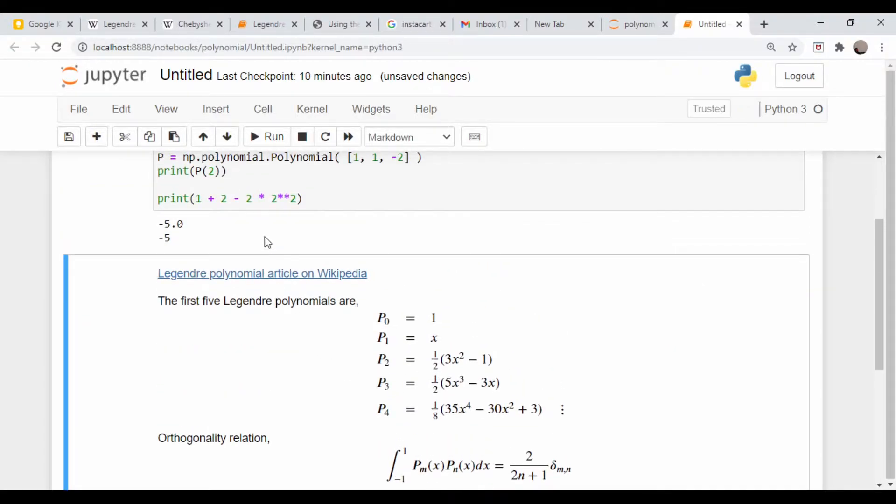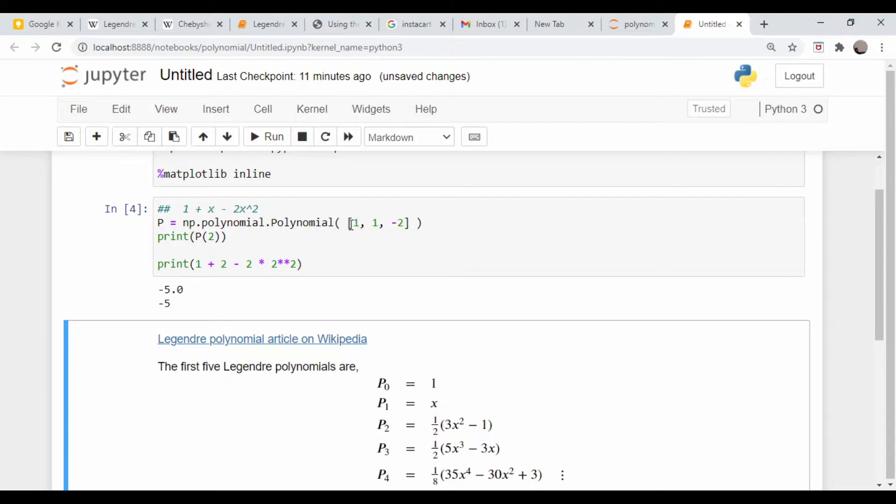So let's just confirm that: print 1 plus 2 minus 2 times 2 squared. And indeed we get minus 5.